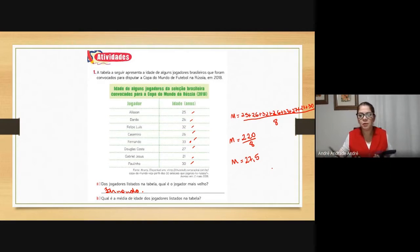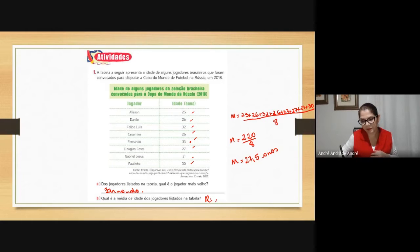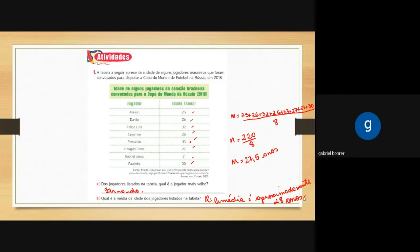A média de idade vai ser 27,5. Nesse caso, a gente pode até aproximar, né? Aproximadamente 28 anos. A média de idade é aproximadamente 28 anos. Não tem necessidade de arredondar, poderia ser 27 anos e 6 meses. Não é obrigatório arredondar.